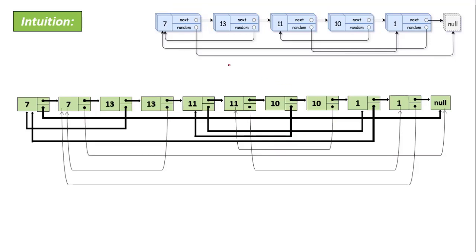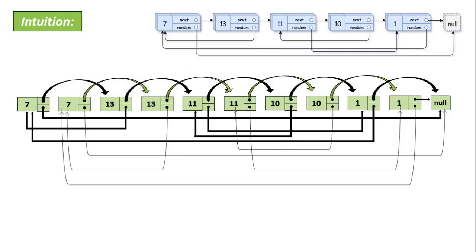After that, we're going to disconnect the links and connect each next pointer by skipping one node. Here as well — let's disconnect and connect by skipping one node. Then disconnect, connect by skipping one node. And so on. They will be represented like this. For this resulting linked list, we have the head pointing to node 7, and we'll return this head. This is how we can solve this problem.